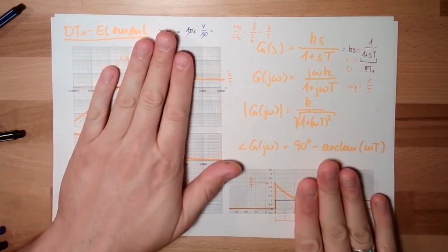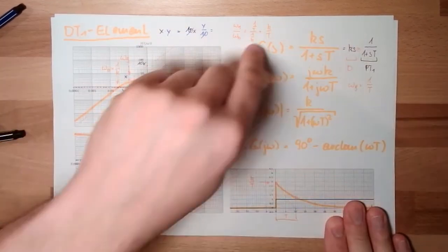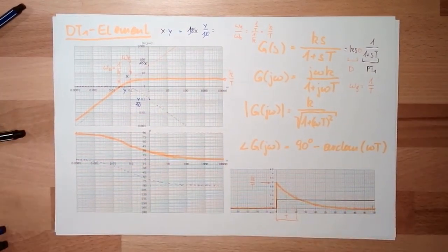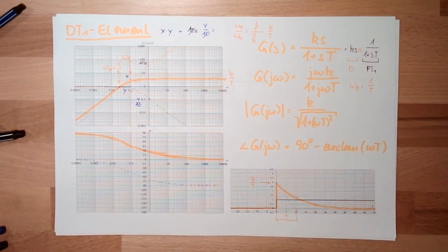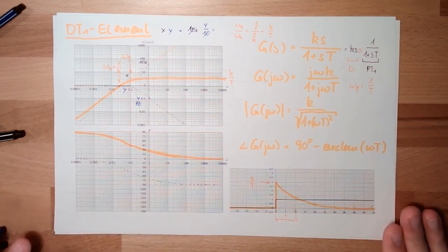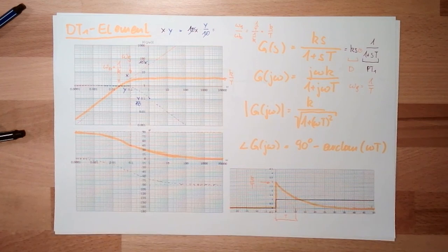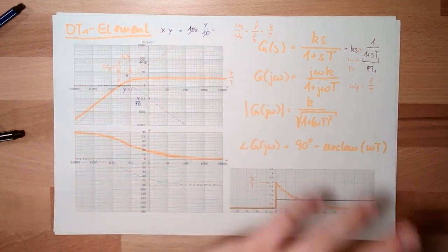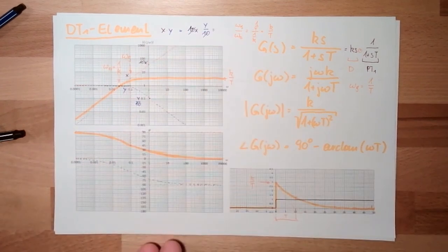So those are the frequency response and step response of a dt1 element, along with its transfer functions — just derived from the combination of those two elements. Next time, we are going to talk about another combined element: a proportional (P) and D element combined in parallel rather than in series. Thank you very much for listening, and goodbye.